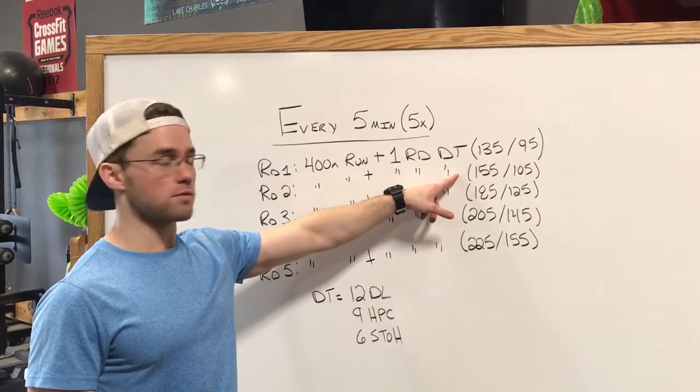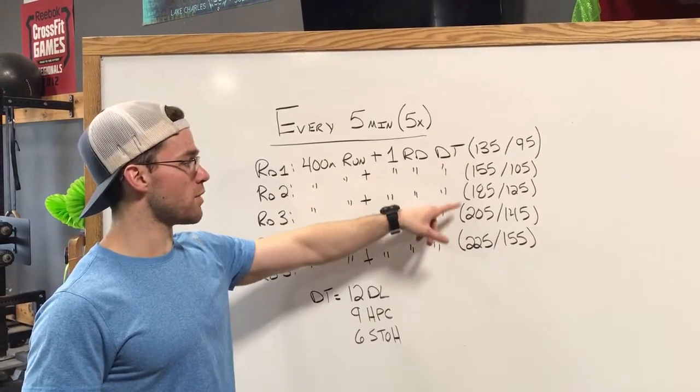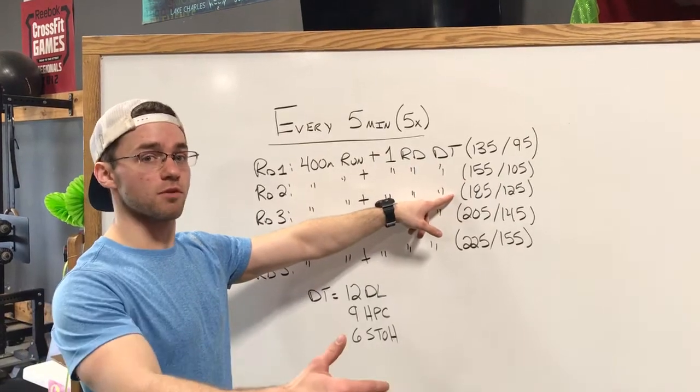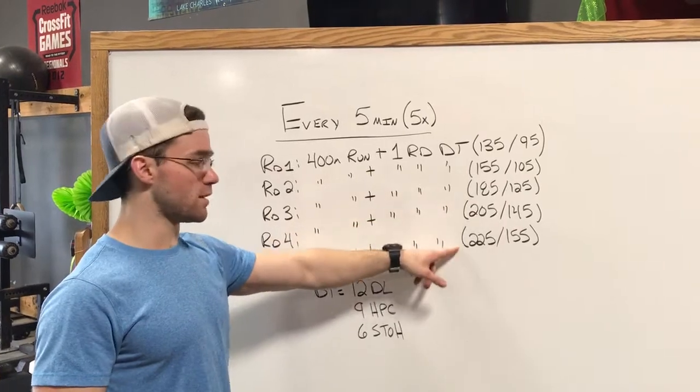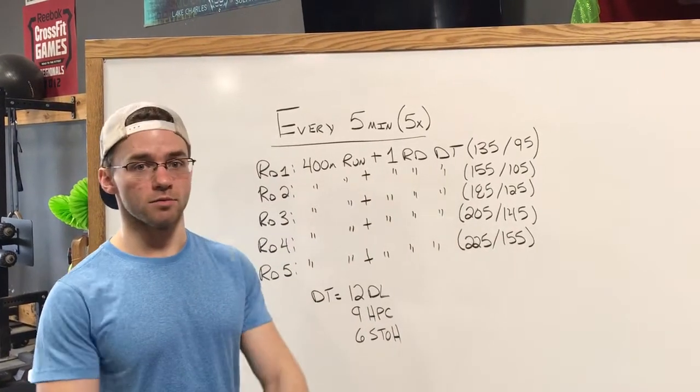Then the second round to be right in that medium range, that moderate weight. The third round being in that heavier moderate weight. The fourth round being lighter heavy, like a lighter end of heavy. And then the fifth round being heavy, real heavy.